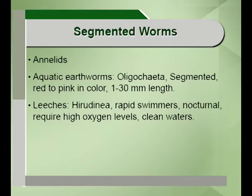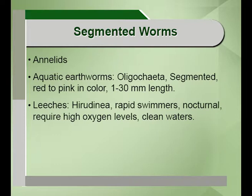Segmented worms belong to the phylum Annelida and can be classified into two types: Hirudinea and Oligochaeta. The Oligochaeta include earthworms, which are segmented, red and pinkish in color and quite long. Leeches or Hirudinea are rapid swimmers and sometimes have a ventral sucker that can attach to humans and draw blood, making them quite dangerous.